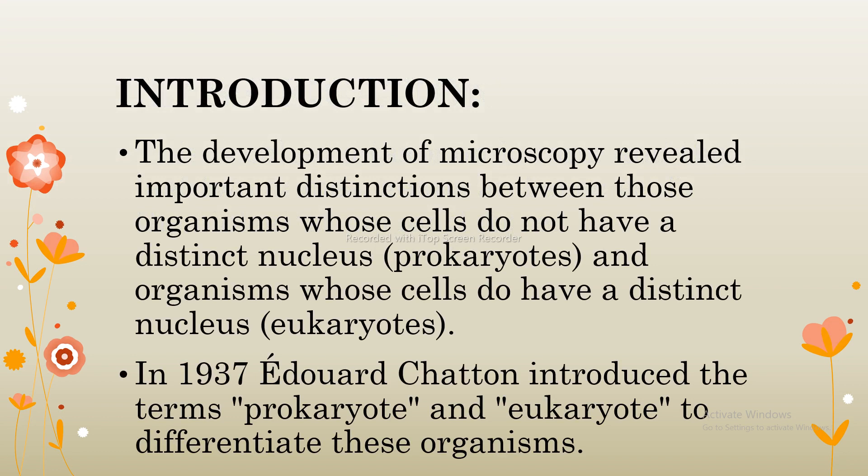Next, I am going to discuss the introduction of the four-kingdom classification system. The development of microscopy revealed important distinctions between those organisms whose cells do not have a distinct nucleus — called prokaryotes — and organisms whose cells do have a distinct nucleus — called eukaryotes. In 1937, Edward Chatton introduced the terms prokaryote and eukaryote to differentiate these organisms.